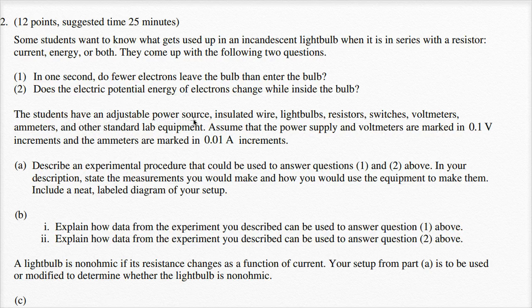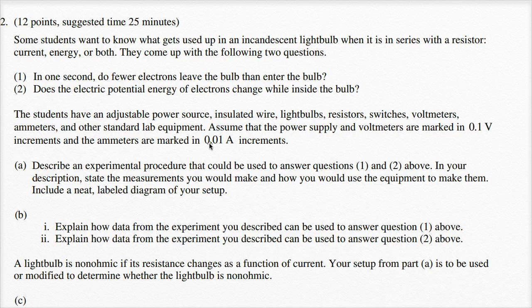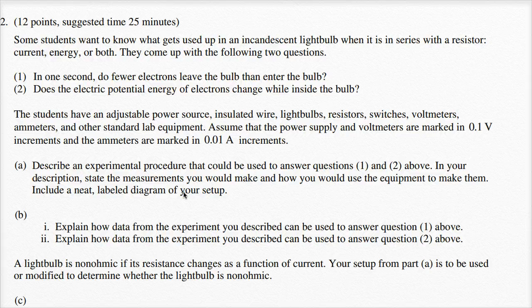The students have an adjustable power source, insulated wire, light bulbs, resistors, switches, voltmeters, ammeters, and other standard lab equipment. The power supply and voltmeters are marked in tenths of a volt increments, and ammeters are marked in hundredths of an amp increments. The task is to describe an experimental procedure to answer questions one and two, including a neat labeled diagram of the setup.